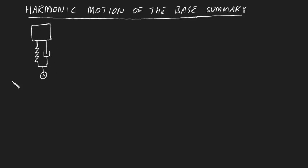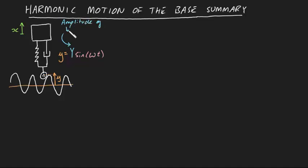Imagine you have a mass connected to a base via a spring and damper. Let's say that the base is constrained to move vertically according to the equation y equals capital Y sine omega t, where capital Y is called the amplitude of base motion in meters, and omega is called the base excitation frequency in radians per second.